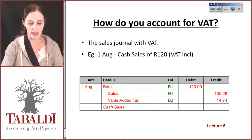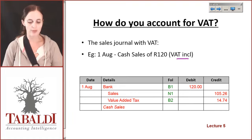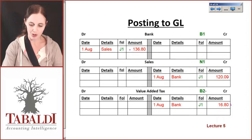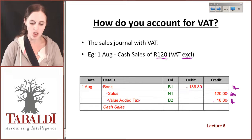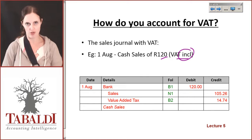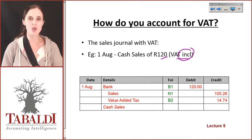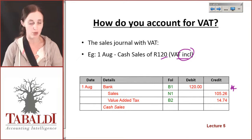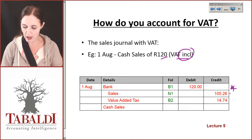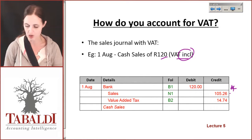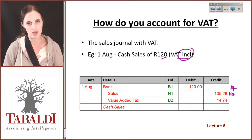Now, what if the cash sale of 120 Rand is VAT inclusive this time? Remember, the last journal we looked at was VAT exclusive, which meant we were charging 14% on top of the 120 Rand. Now in this example, the 120 includes the 14%. So 120 Rand is the total amount going into the bank account. In the bank account, the full 114% goes in because that's exactly how much I'll get paid. I should only recognize 100% of that sale, and 14% of that sale should go to the receiver — to VAT.